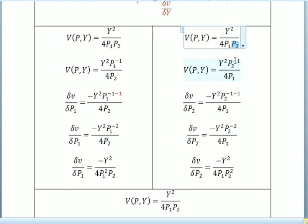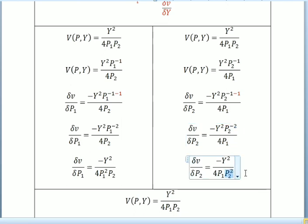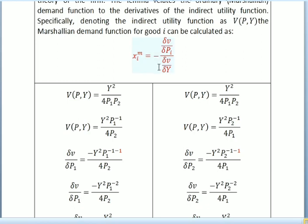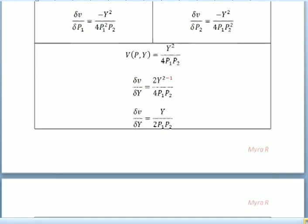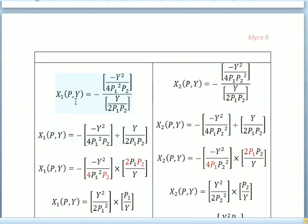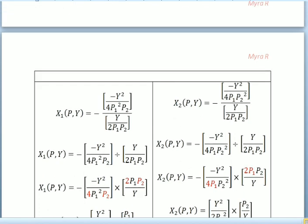We bring down the power of p1^(−2), making it positive (y² over 4p1²p2). Then we differentiate V with respect to p2: we bring p2 above so it becomes negative, differentiate, and get negative y²·p2^(−2) over 4p1, then bring down p2^(−2) to make it positive. Then we differentiate V with respect to y: from y² over 4p1p2 we get 2y over 4p1p2, simplifying to y over 2p1p2.